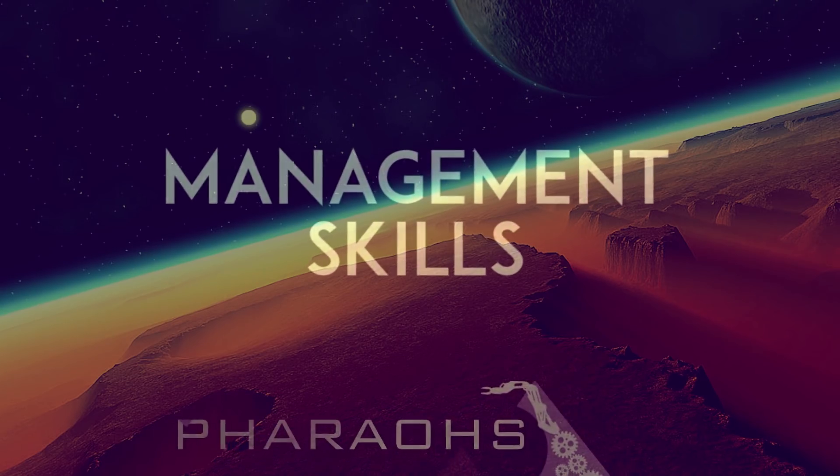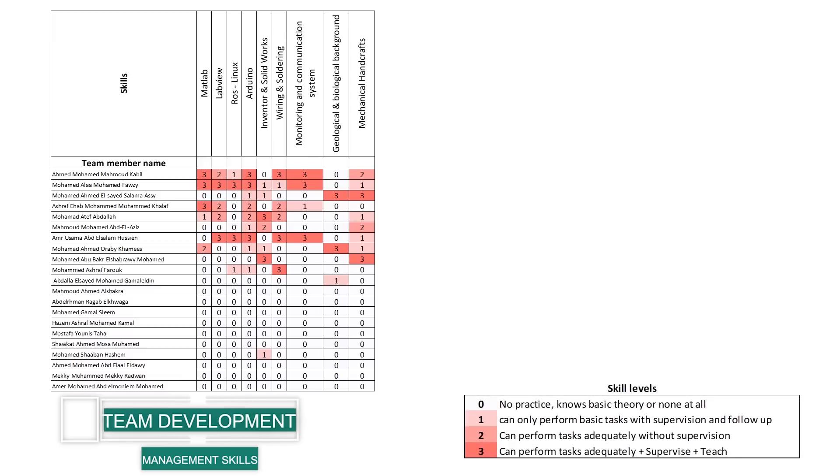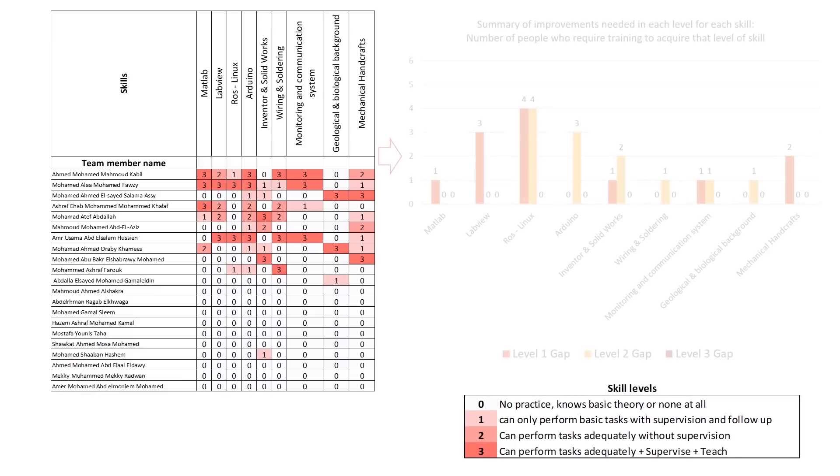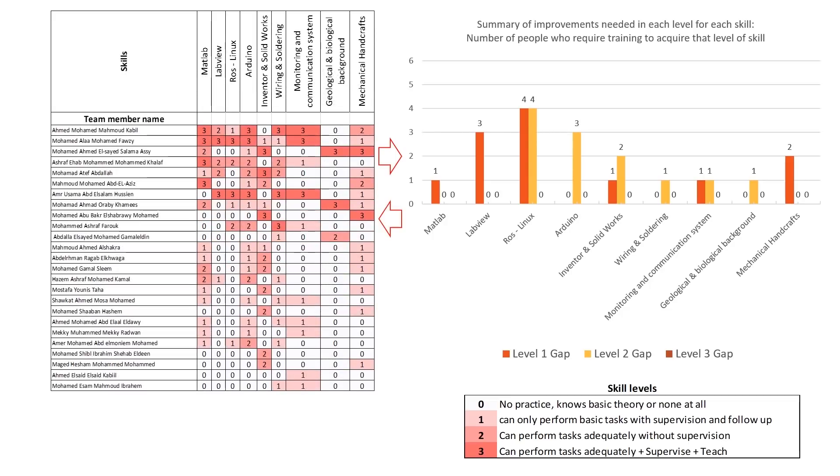One of our management considerations this year was focusing on the development of the team. The tally on the left shows each member's skill level from day one. A training program is developed and implemented, then the member skills are shown again at the end of the year.